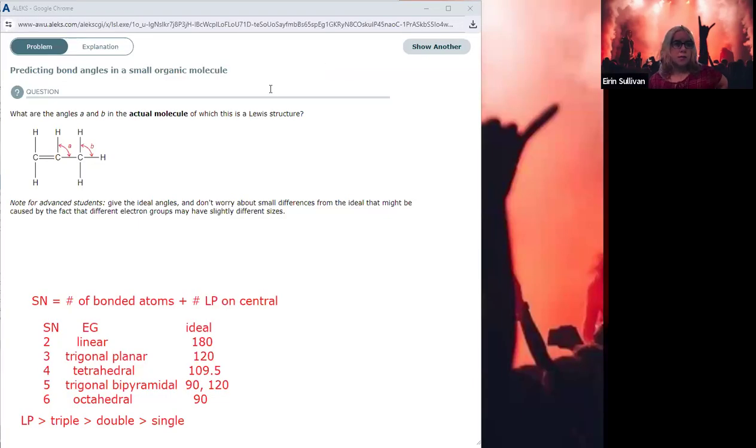When we're asked to predict the bond angles based on the Lewis structure of a small organic molecule, well, the Lewis structure has been drawn for us, so that's great. What we're going to do is look at each of those central atoms in turn and determine what their steric number is, therefore what the electron group geometry is, and therefore what the ideal bond angle is.